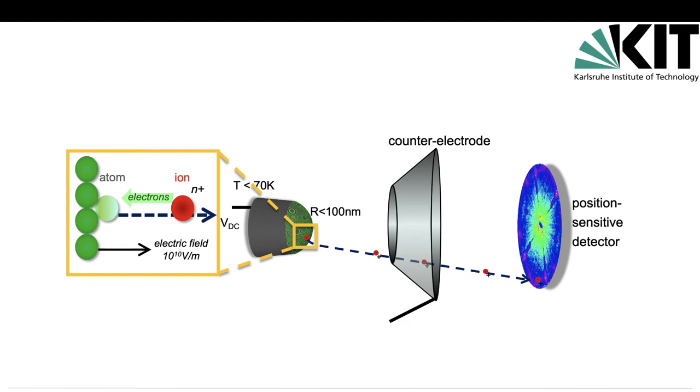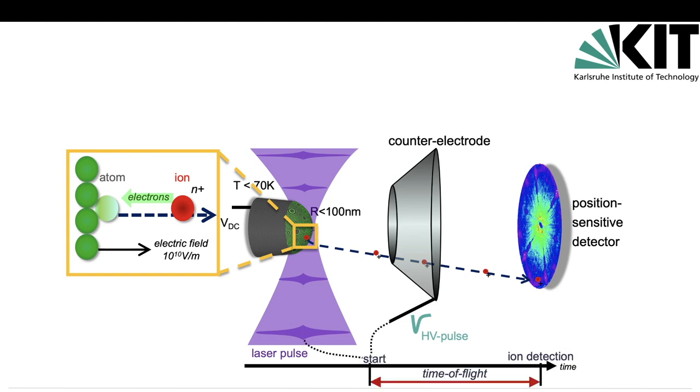The evaporation is controlled so that time of flights of the field-evaporated ions can be measured by using a laser pulse or a high voltage pulse. By pulsing these two evaporation triggers, we can measure the time of flights, which forms the basis for mass spectrum discrimination.